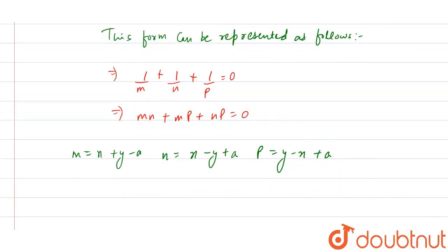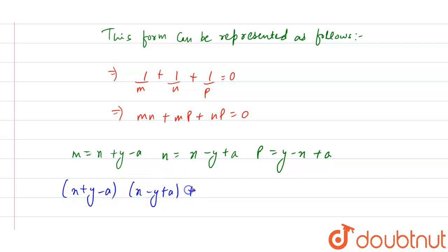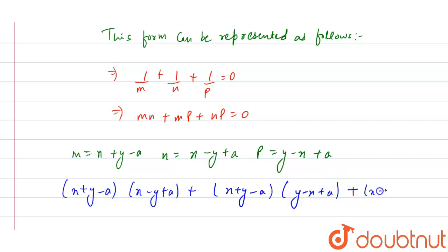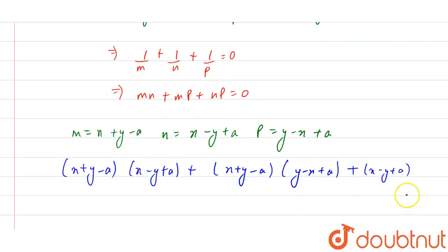Substituting these values, mn equals (x plus y minus a)(x minus y plus a), mp equals (x plus y minus a)(y minus x plus a), and np equals (x minus y plus a)(y minus x plus a).